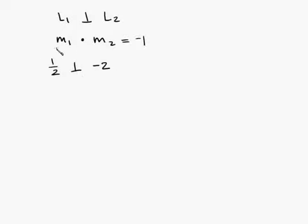So that means that this slope right here is perpendicular to this slope here. And if you multiply the 2, you get a negative 1.